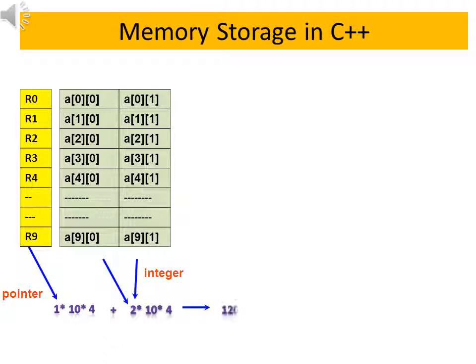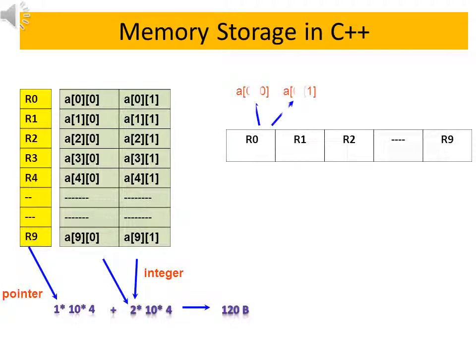Now take one-dimensional array. When a single one-dimensional array is used, that is when the elements are mapped using row major order, then there are 10 columns and each has two elements. So total space 10 into 2 into 4 equal to 80 bytes.